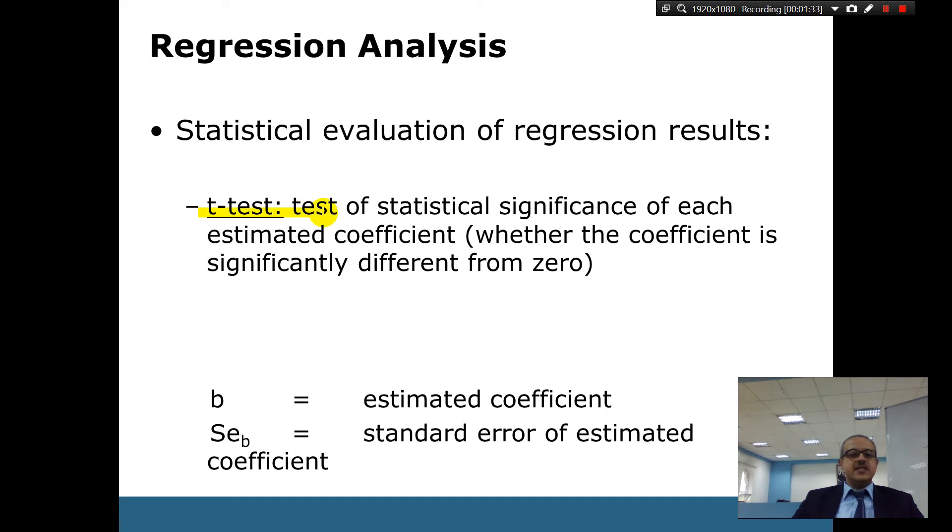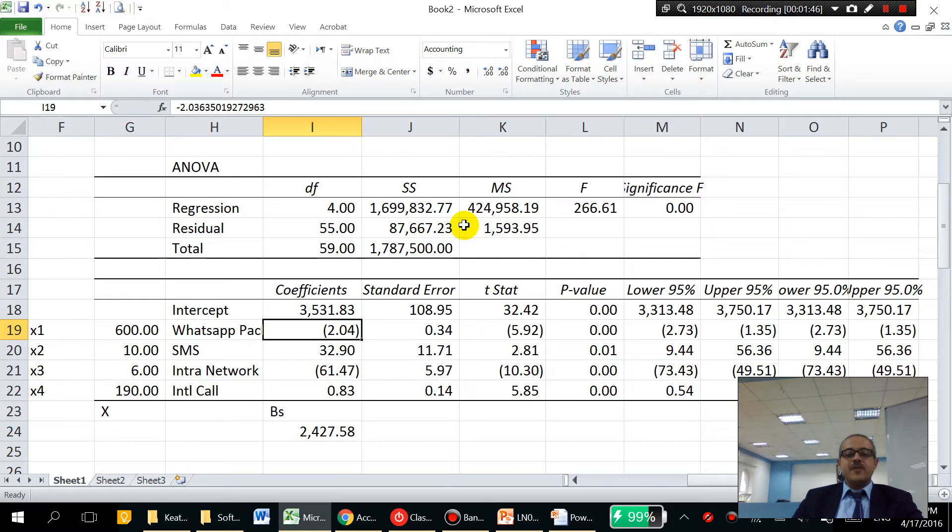And then we've got the t-test. It's a statistical significance of each estimated coefficient. Why is it important to look at the t-test? Because we can do a regression analysis and it means nothing. And that's the example in which, in this case, all of these are significant, right? And we can use the rule of two. All of these numbers are above two. And of course, don't worry about the sign.